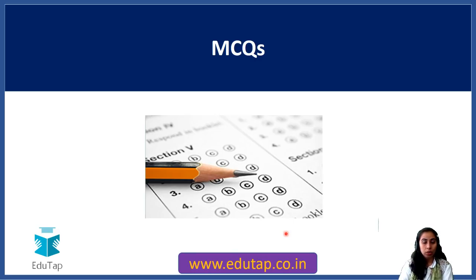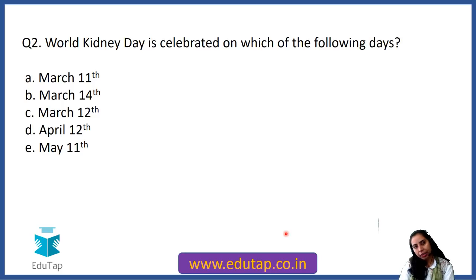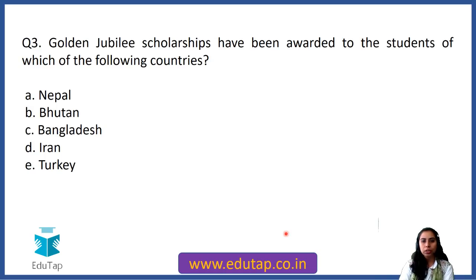Let us now solve some MCQs — I recommend you pause the video and try to answer each question. Question 1: Al Naqa is a joint military exercise between India and which country — Yemen, Nepal, Syria, Oman, or Bangladesh? The answer is Oman. Question 2: World Kidney Day is celebrated on which date? The answer is March 14th. Question 3: Golden Jubilee Scholarships have been awarded to the students of which country? The answer is Nepal.